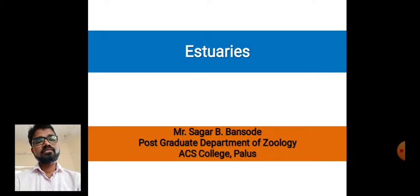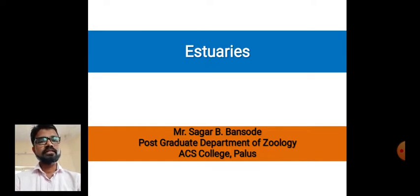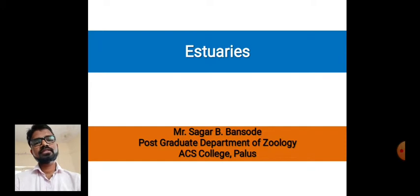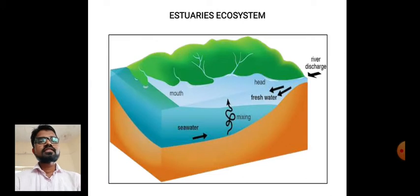with their zones and the stratification of each habitat. In this unit on types of habitat, the last topic is estuaries. We will discuss it in great depth, so let's start — the estuaries ecosystem.